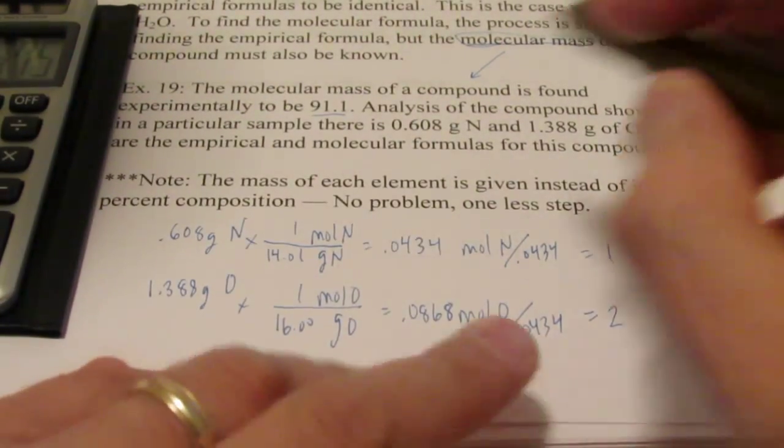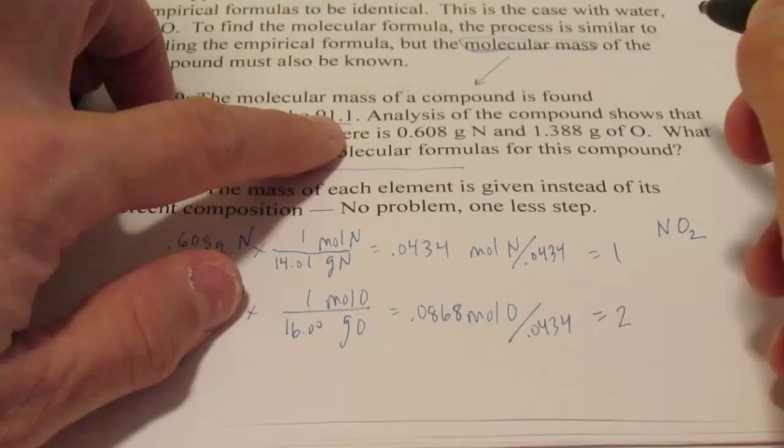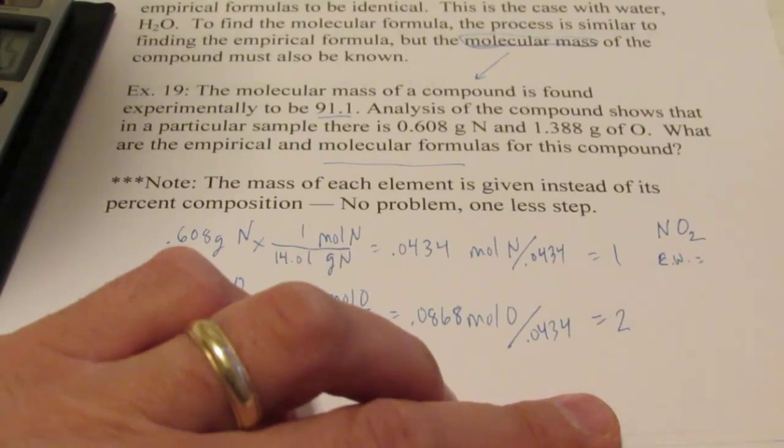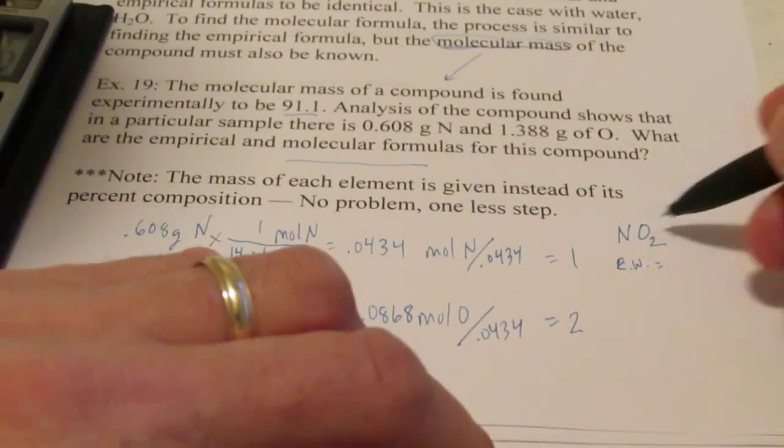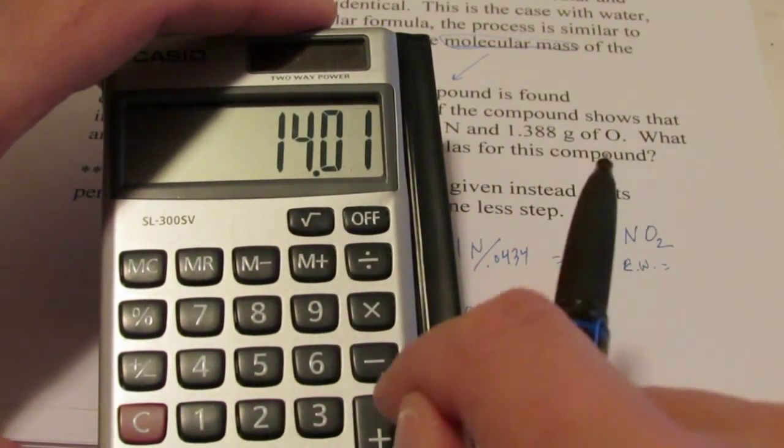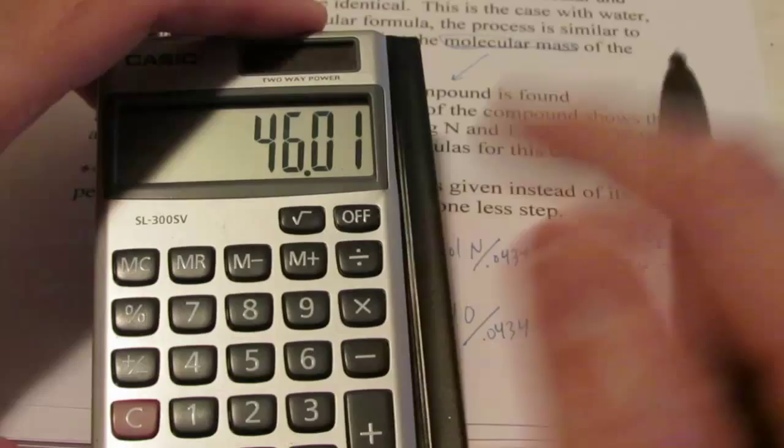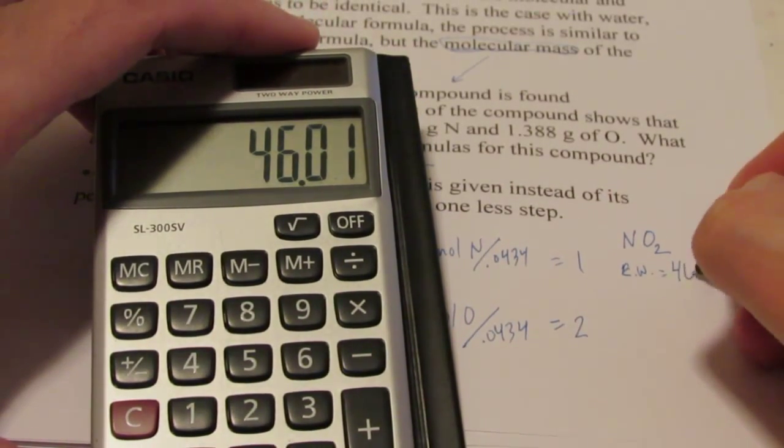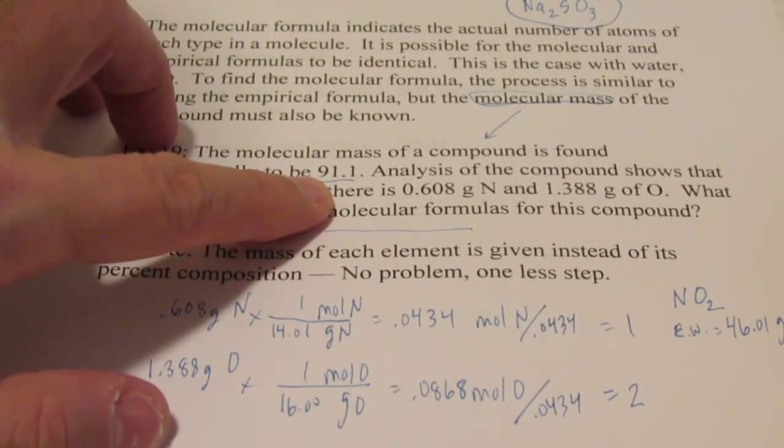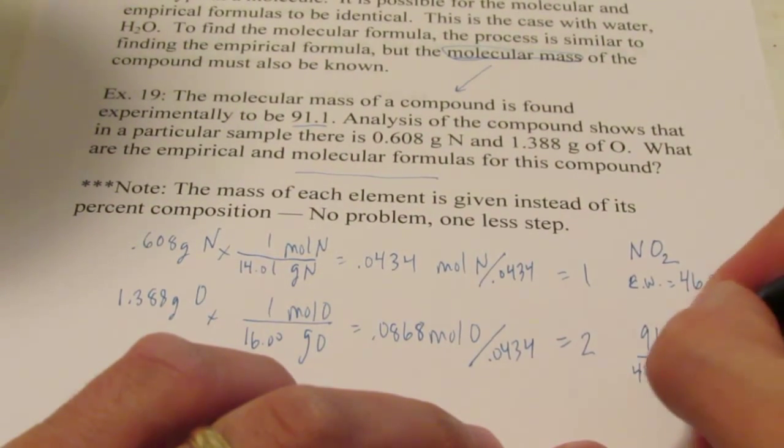Now we're not done because at this time I also want to find the molecular formula as well. And for that I need to know the molecular weight, which I know. But I also need to know what I like to call the empirical weight. The empirical weight obviously is the weight of the empirical formula. Now that consists of a nitrogen, 14.01, and two oxygens, 16.00 apiece. So the empirical weight is 46.01 grams per mole. Now is that the same as the molecular weight? Nope, it's not.